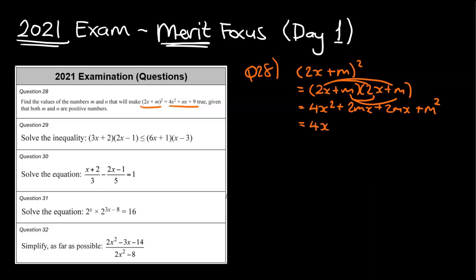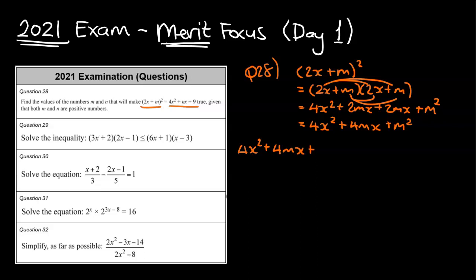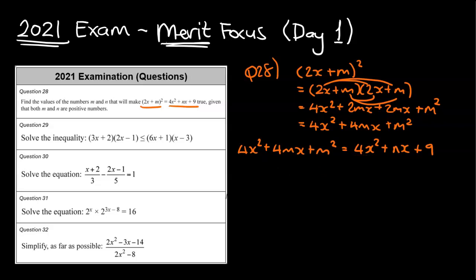So that's 4x squared plus 4mx plus m squared. Now we compare that to the other equation: 4x squared plus 4mx plus m squared equals 4x squared plus nx plus 9. Making comparisons: the 4x squared terms match up on both sides.